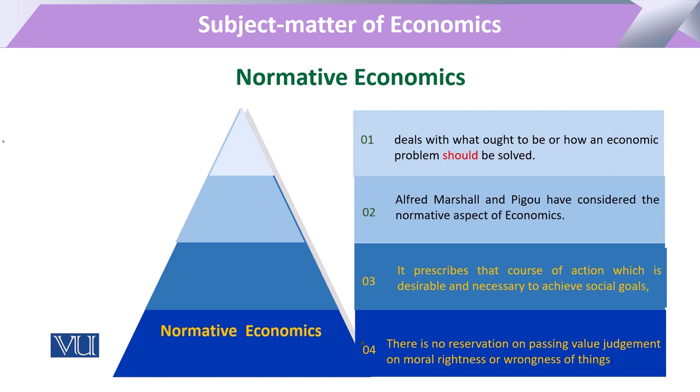In normative economics, we can say that certain consumption was not good either for society or for the health of the consumer. For example, a consumer may attain utility, but he should not do so keeping in view the welfare and human rights of other companions and neighbors — which can be related to issues like noise pollution.